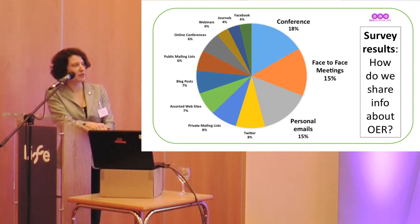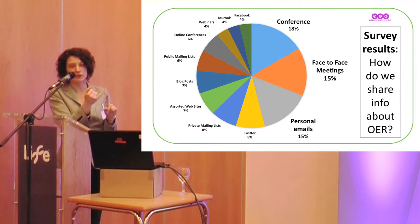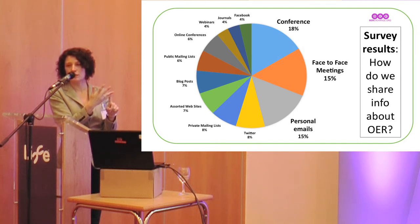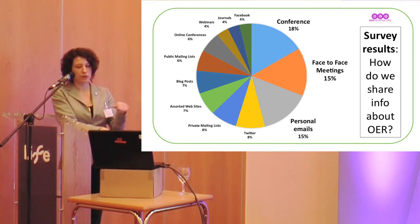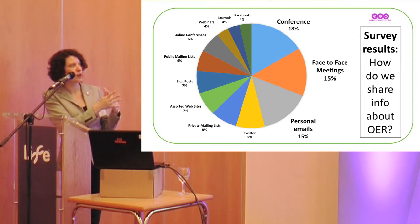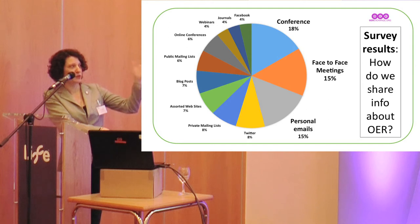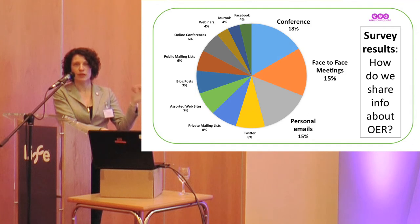What my survey showed was that the places where we talk about OER — with other people in the field, when we're looking for information or specifically sharing it — the number one category was conferences, well over 20%. Next up was face-to-face meetings with people we see on a regular or semi-regular basis, and the third category was personal emails. All three answered at about 20% frequency. The rest — Twitter, private mailing lists, websites, blog posts, public mailing lists, online conferences, webinars, journals, even Facebook — drops immediately to 8% and goes down to 4%.